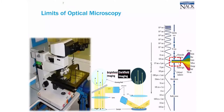Why are we bothering with nano characterization? Why are we not just stuck with optical microscopy in the first place? The one on the left is our good old optical microscopy. We use our eyes as the detectors. We send light down, get the reflection from the particles, take it through the lenses, and create bright field or dark field images.